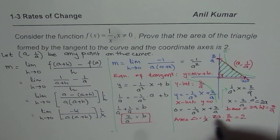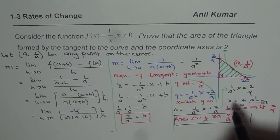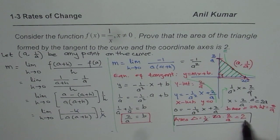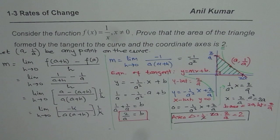So the area is 2 square units for the triangle formed by any tangent, because 'a' is a general point. The idea is: find the equation of the tangent at any point on the curve, then find the x and y intercepts. Half the product of the intercepts gives the area of the triangle formed by the tangent and the coordinate axes, and that always comes out to 2. Thank you and all the best.